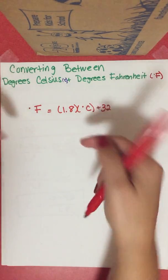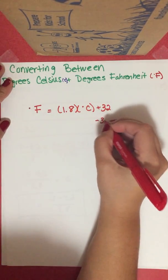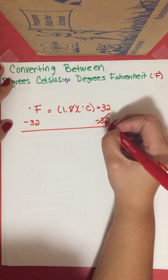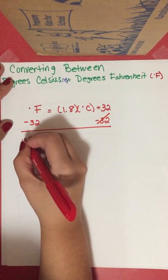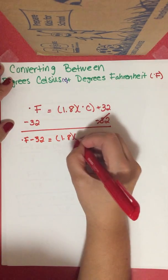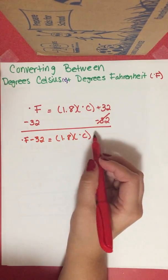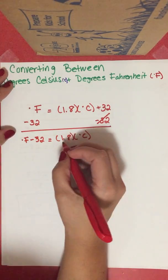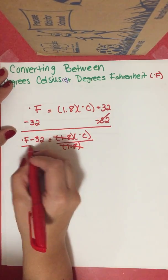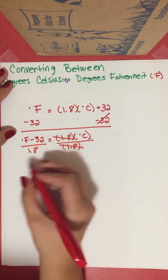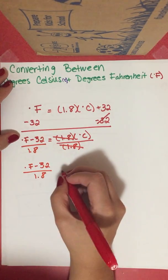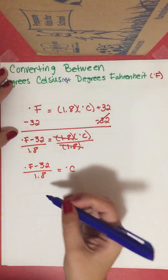If you can only remember that one and can't remember how to get degrees Celsius, we're going to solve for that right now. We subtract 32 from both sides — 32 minus 32 is zero — leaving us with degrees Fahrenheit minus 32 equals 1.8 times degrees Celsius. Since we want to isolate degrees Celsius, we divide both sides by 1.8, giving us: degrees Celsius equals degrees Fahrenheit minus 32 over 1.8.